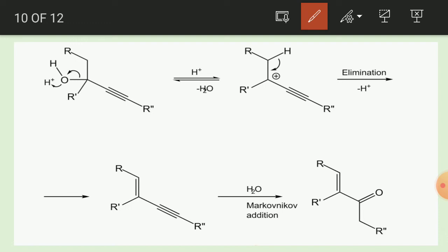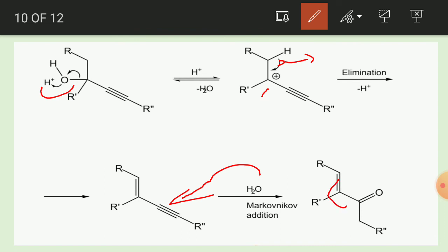In the mechanism: first, H⁺ condition — the lone pair of oxygen abstracts H⁺ and the water molecule is removed, forming a carbocation. This carbocation is stabilized by the adjacent bond, then elimination of a hydrogen takes place. Next, H₂O attacks this carbon, then protonation leads to formation of the ketone group. Because of the resonance structure, an alpha-beta unsaturated ketone is formed.